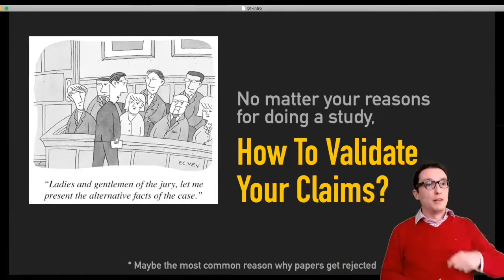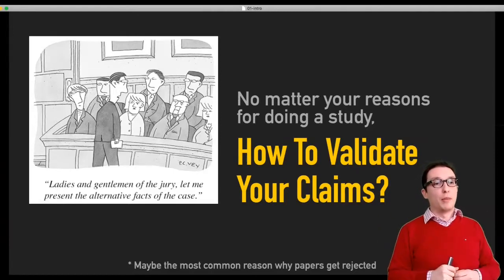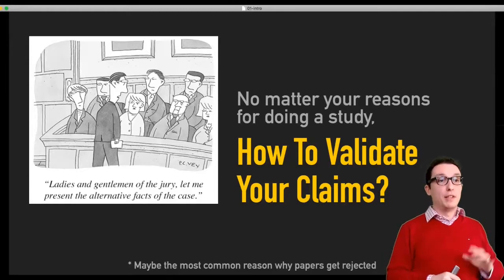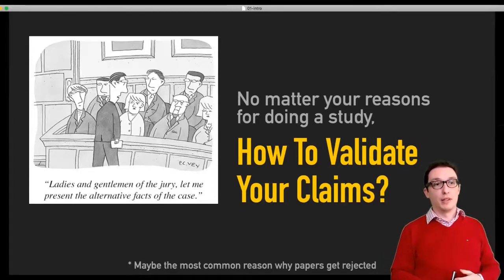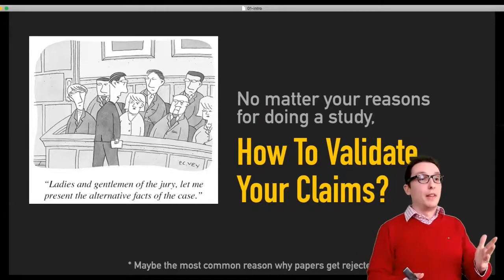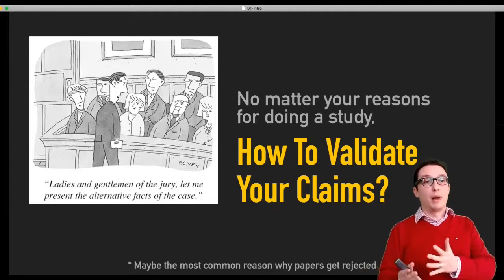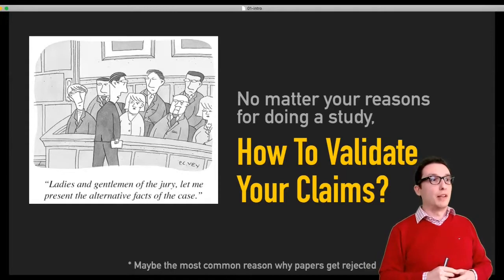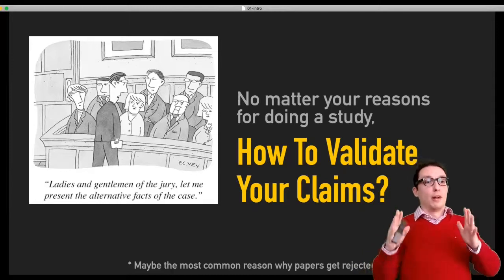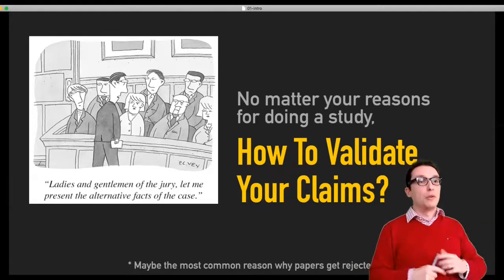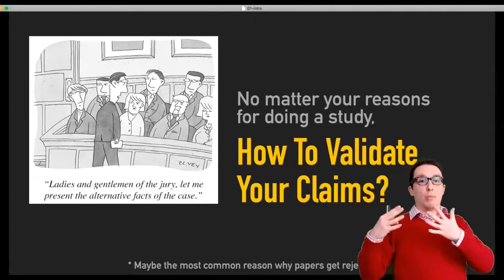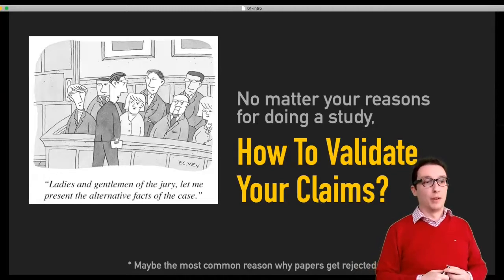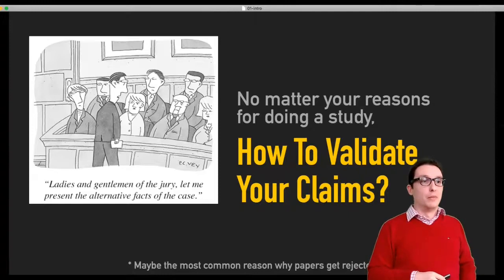It's not because the thing you've invented or written about is not interesting enough. I claim that most often papers are rejected because the claims the authors are making in the paper do not align with the evidence the authors have provided. This is the number one reason why papers are likely to be rejected, no matter the topic. If you take something away from this course, it's learning to properly and appropriately align the claims you are making with the kind of evidence you're willing and able to provide to support them, and to not make claims that are not aligned with the evidence you're providing.